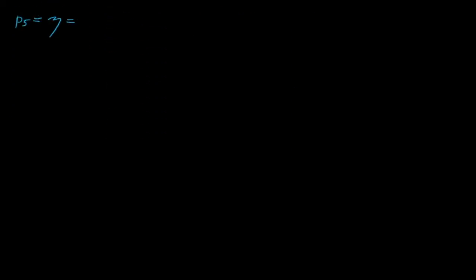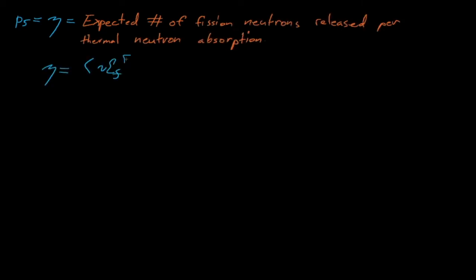P5 is the expected number of fission neutrons that are emitted per thermal neutron absorption in the fuel, which is really just the value of eta for thermal energy neutrons in the fuel.